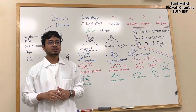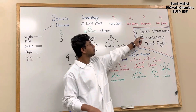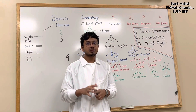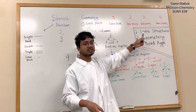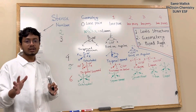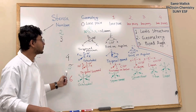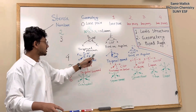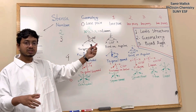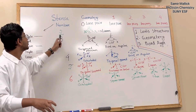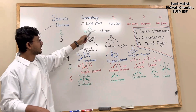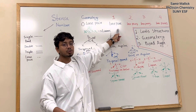Hello, today's video I am going to show you the Lewis structure, geometry, and bond angle of a compound. So first, to determine the Lewis structure, you need to count the steric number. Before going to the Lewis structure, you need to know the steric number, then we will go through geometry and the effect of the lone pair.